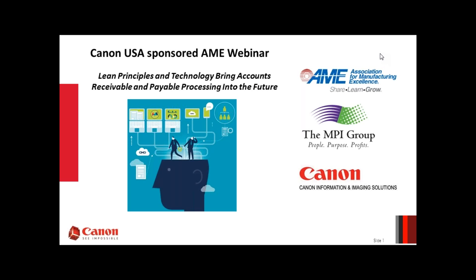I'm pleased to present Lean and Technology: Bring Accounts Receivable and Payable into the Future. My name is Paul Albano from Canon USA. Accounts receivable and accounts payable processes are really the cash lifelines of an organization, yet very little attention is paid to how these activities are managed, which can leave inefficient, slow, and error-prone workflows in place. In today's webinar, you're going to learn some real-world examples of how a lean approach to AR and AP processing can help standardize, automate, and improve the process.